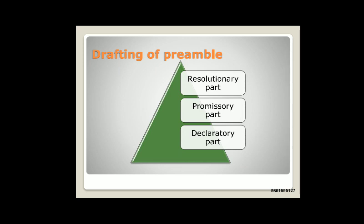The last part is the declaratory part. The declaratory part is the last phrase in the preamble: 'In our constituent assembly, this 26th day of November 1949, do hereby adopt, enact and give to ourselves this constitution.' This means it is a declaration that on 26th November 1949 we adopted and enacted and gave to ourselves this constitution. The constitution derives its authority from the people themselves — that is the declaratory part.